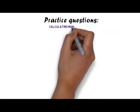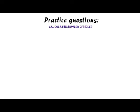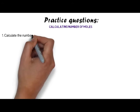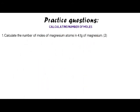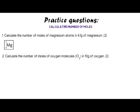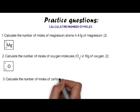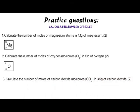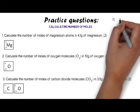Here are some practice questions for calculating the number of moles. Number one: calculate the number of moles of magnesium atoms in 4.1 grams of magnesium. Number two: calculate the number of moles of oxygen molecules (O₂) in 10 grams of oxygen. Number three: calculate the number of moles of carbon dioxide molecules (CO₂) in 3.5 grams of carbon dioxide. Pause the video and have a go at all three questions.